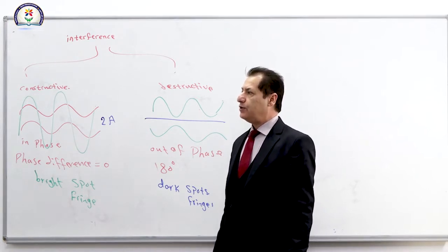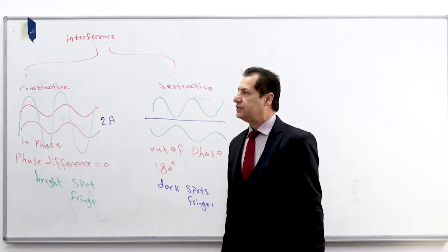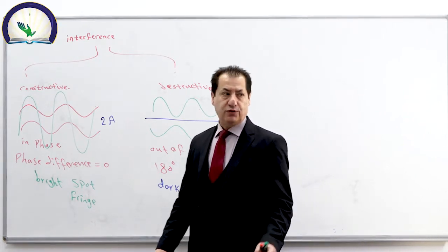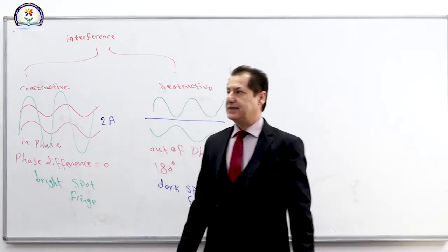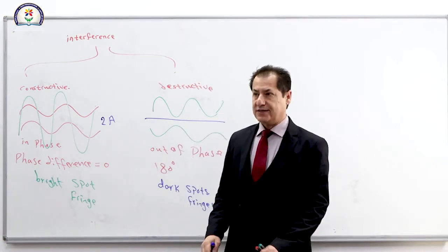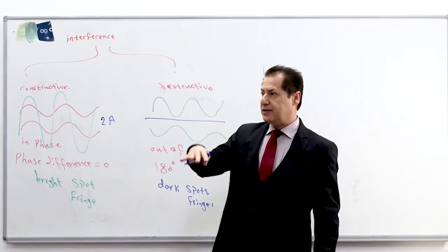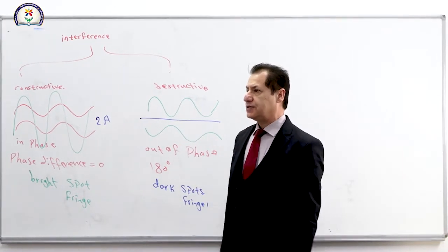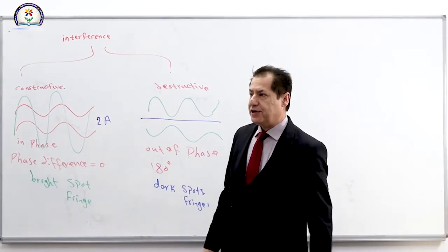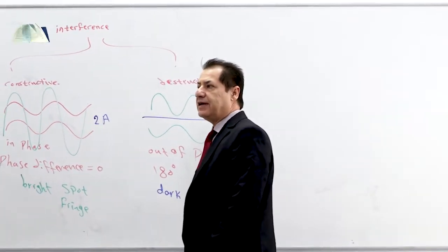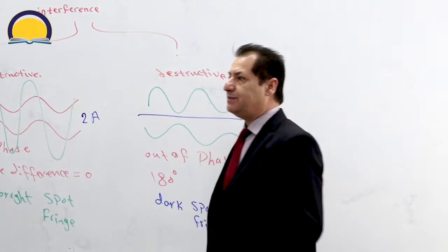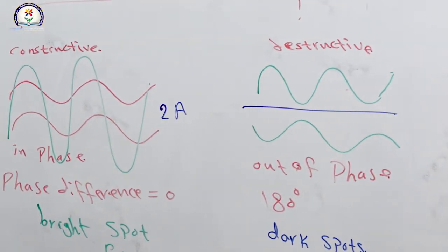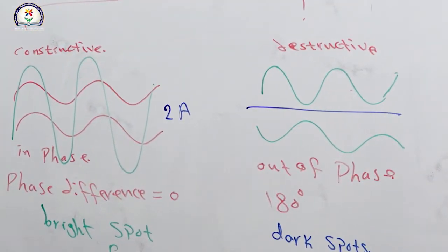Question number two: interference in sound is recognized by differences in volume. How is interference in light recognized? Of course, by differences in brightness — the light brightness changes.